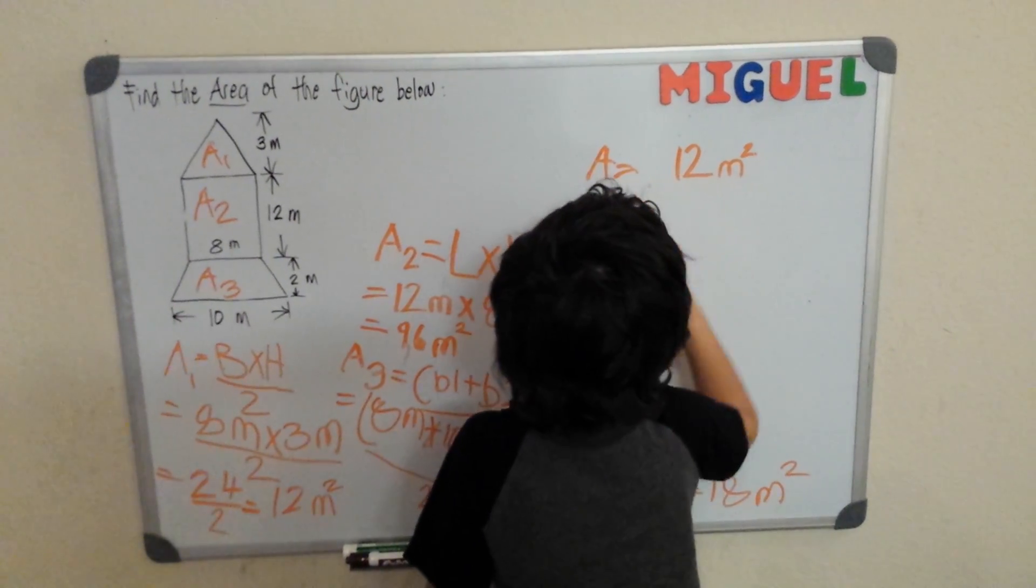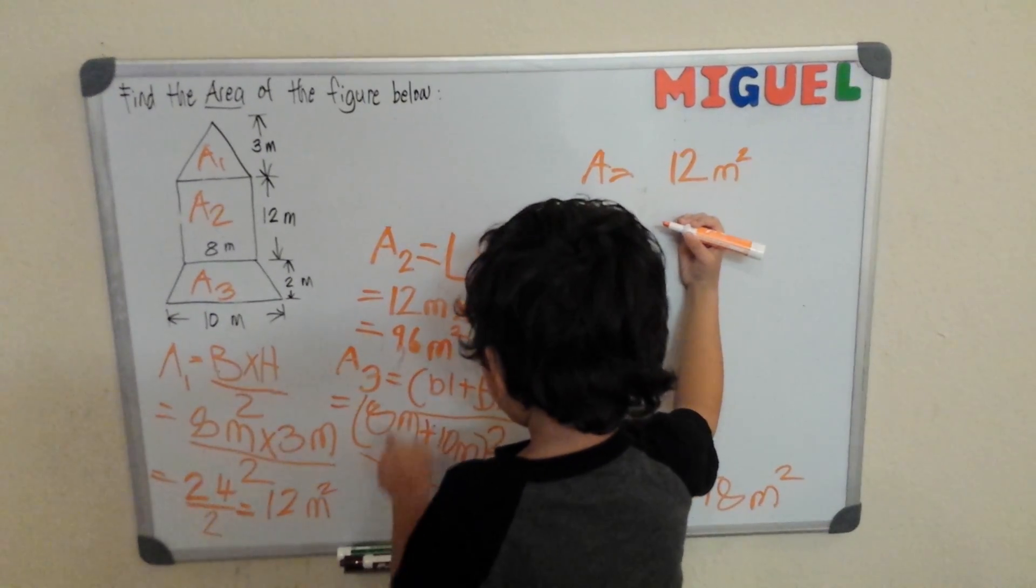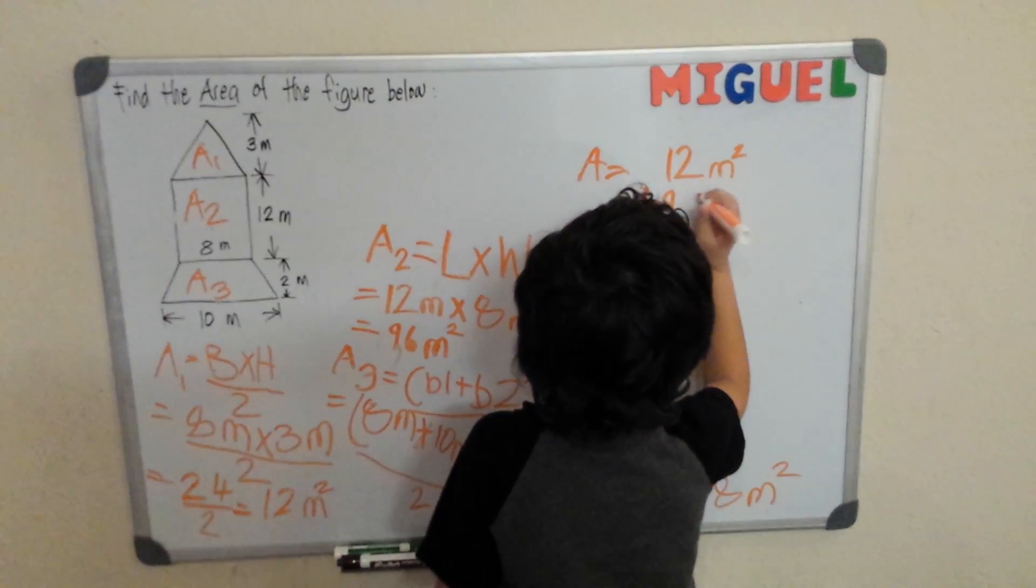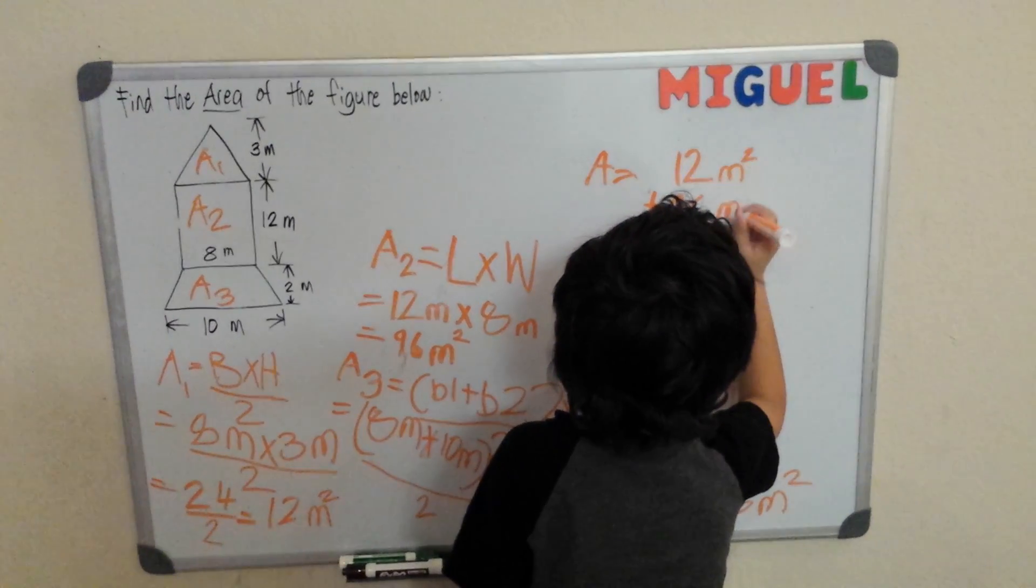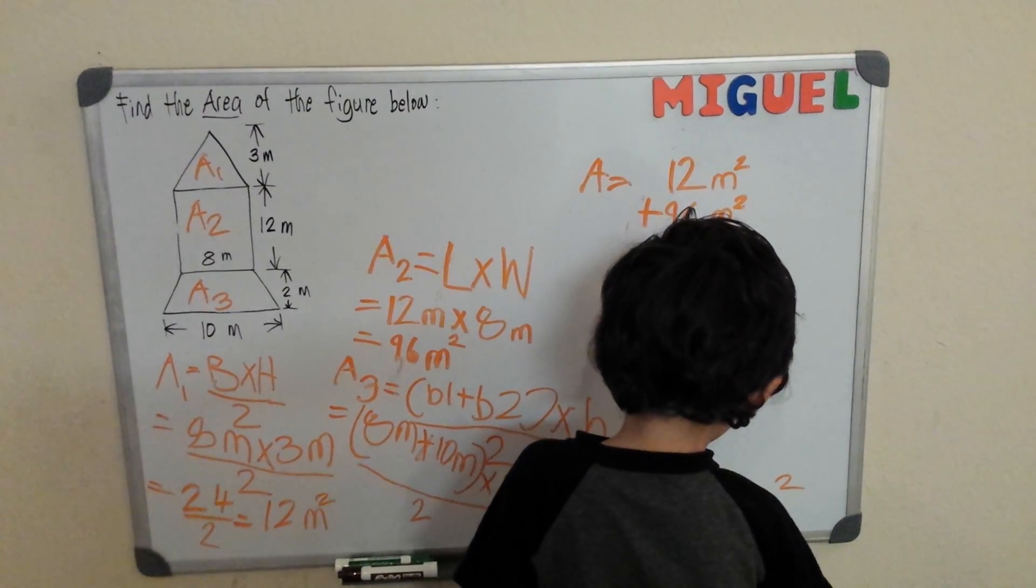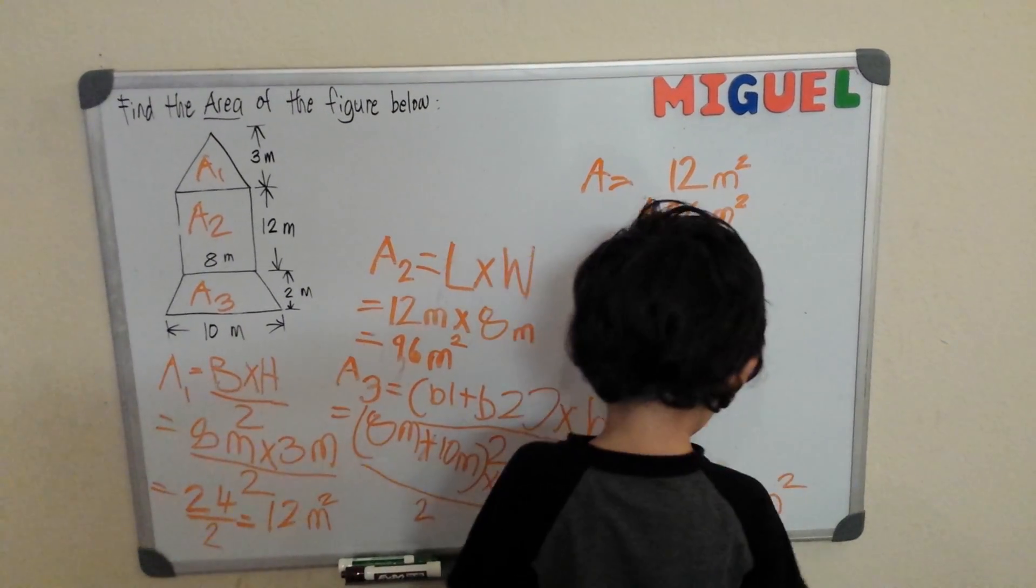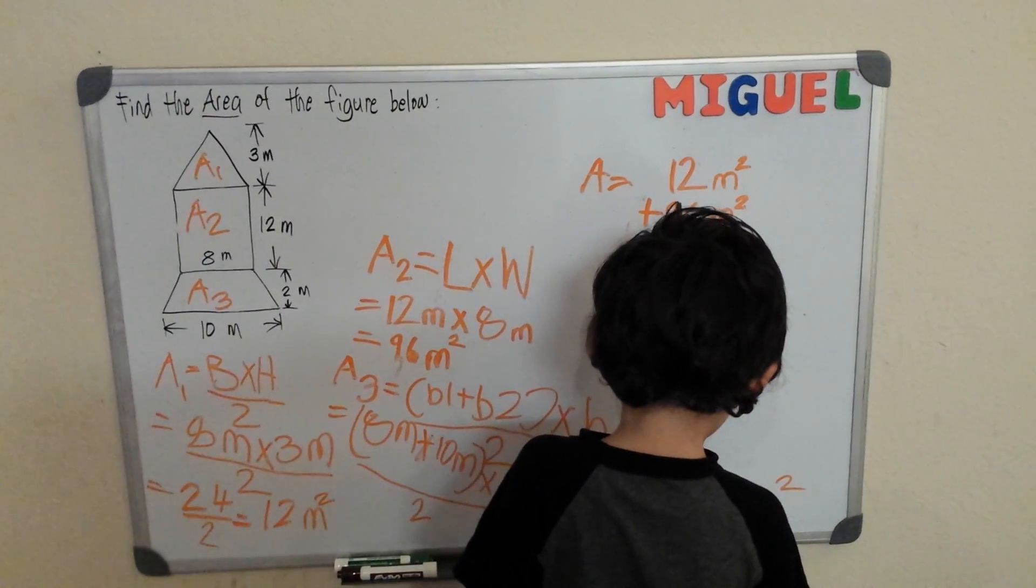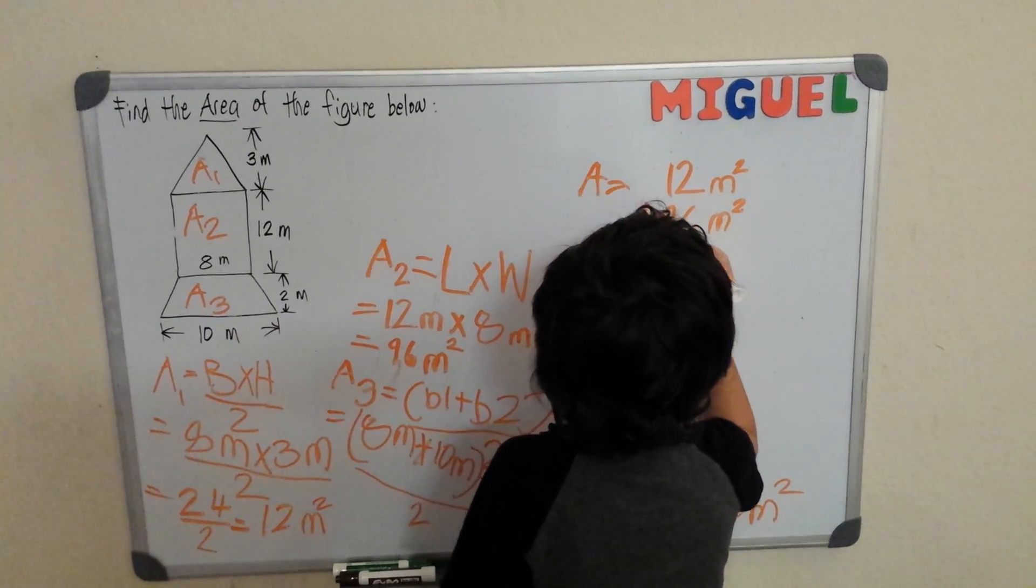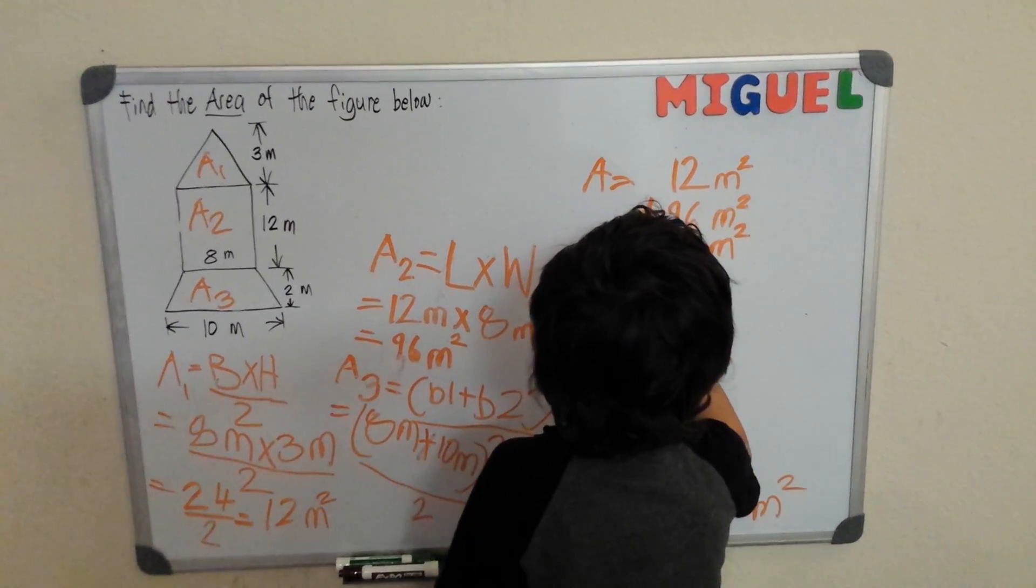We're going to get 12 meters squared. We put it over here, plus 96 meters squared. These are all two digits. Plus 18 meters squared.